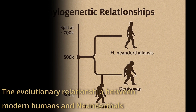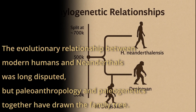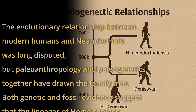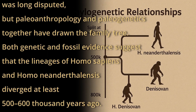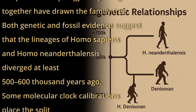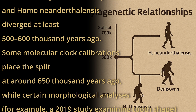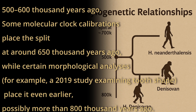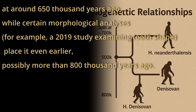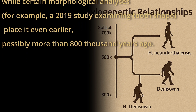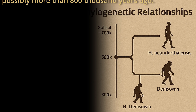The evolutionary relationship between modern humans and Neanderthals was long disputed, but paleoanthropology and paleogenetics together have drawn the family tree. Both genetic and fossil evidence suggests that the lineages of Homo sapiens and Homo neanderthalensis diverged at least 500 to 600,000 years ago. Some molecular clock calibrations place the split at around 650,000 years ago, while certain morphological analyses — for example, a 2019 study examining tooth shape — place it even earlier, possibly more than 800,000 years ago. This latter assumption is reinforced by the fact that the teeth of the Sima de los Huesos people, who lived 430,000 years ago, already differ significantly from what we would expect of a common ancestor, suggesting a long independent evolution.